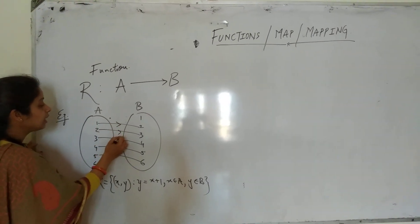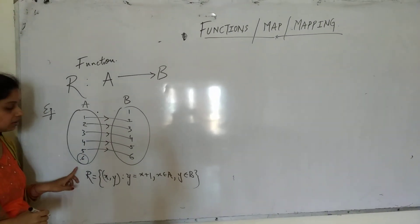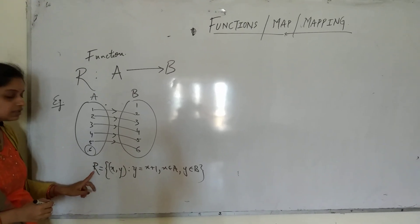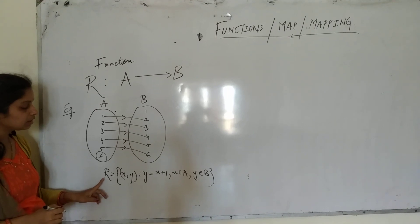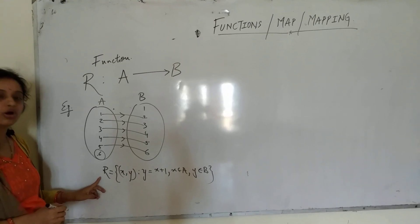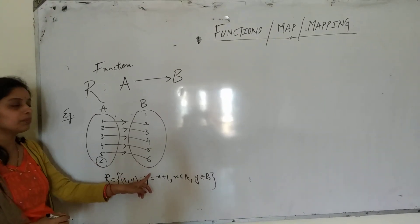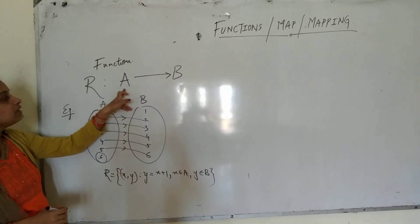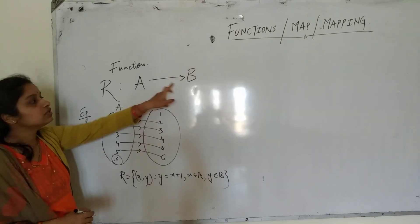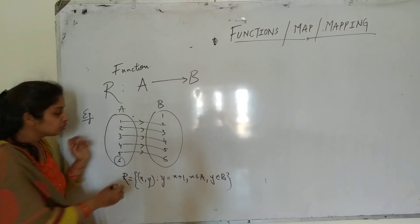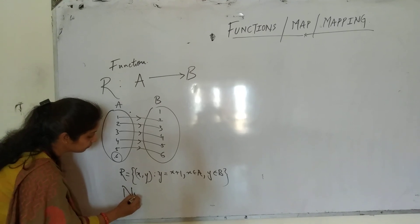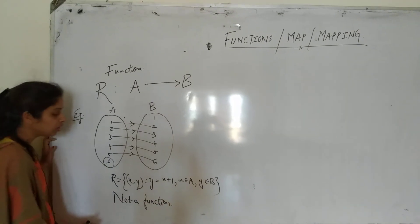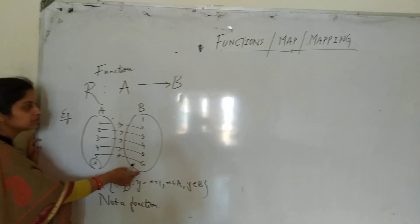We can see that here 6 has no image in set B. According to the definition of function, each element of set A has one and only one image in set B. So this is not a function — because 6 has no image in set B.